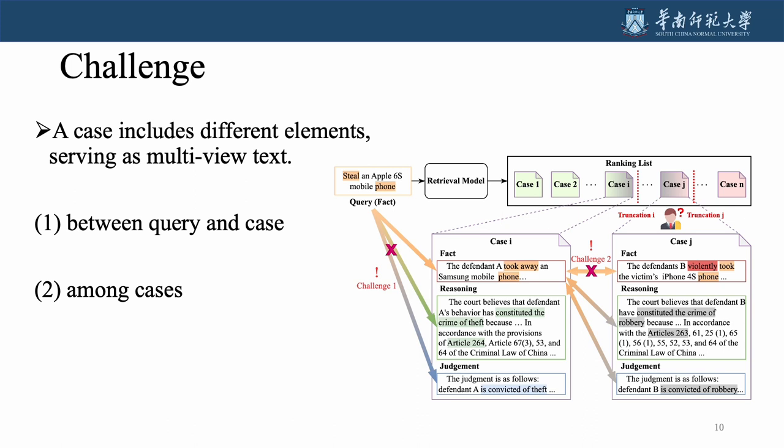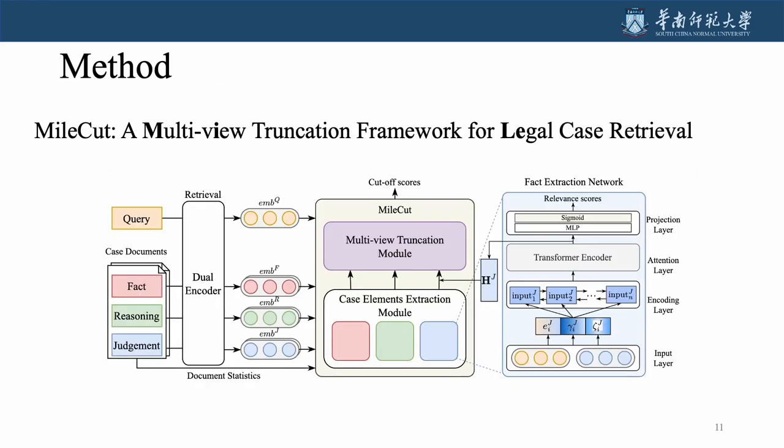The second challenge is among cases. Understanding the relation of elements between different cases is crucial for efficiently removing irrelevant cases. In this paper, we propose a novel multi-view truncation framework for legal case retrieval task named Myocut, by exploring multi-view information in case document from the ranking list.